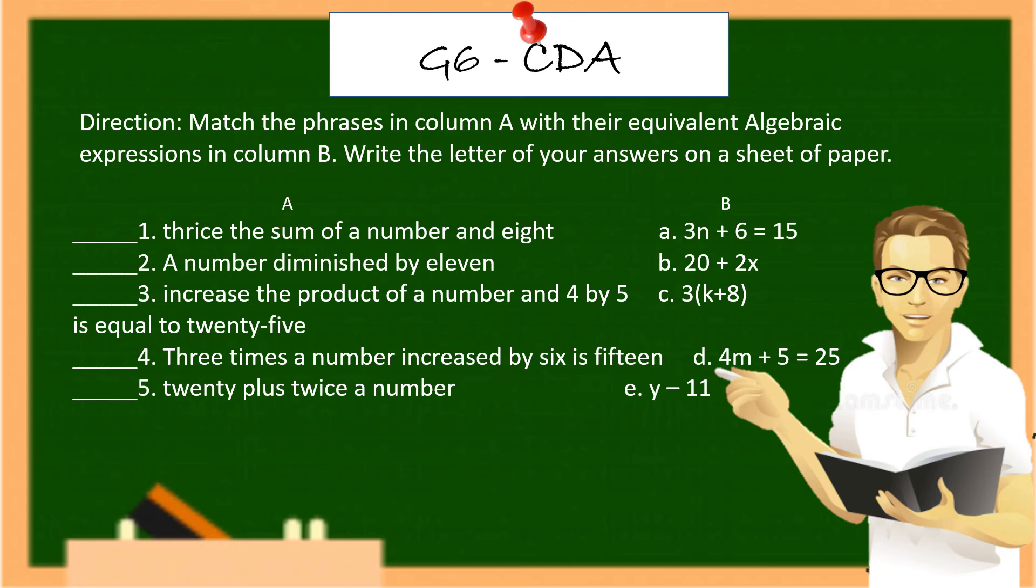So, be ready. Number 1, if your answer's letter is C, 3 times k plus 8 and you are correct. Number 2 is letter E, y minus 11. Number 3 is letter D, 4m plus 5 is equals to 25. Number 4 is letter A, 3n plus 6 is equals 15. And number 5 is letter B, 20 plus 2x.